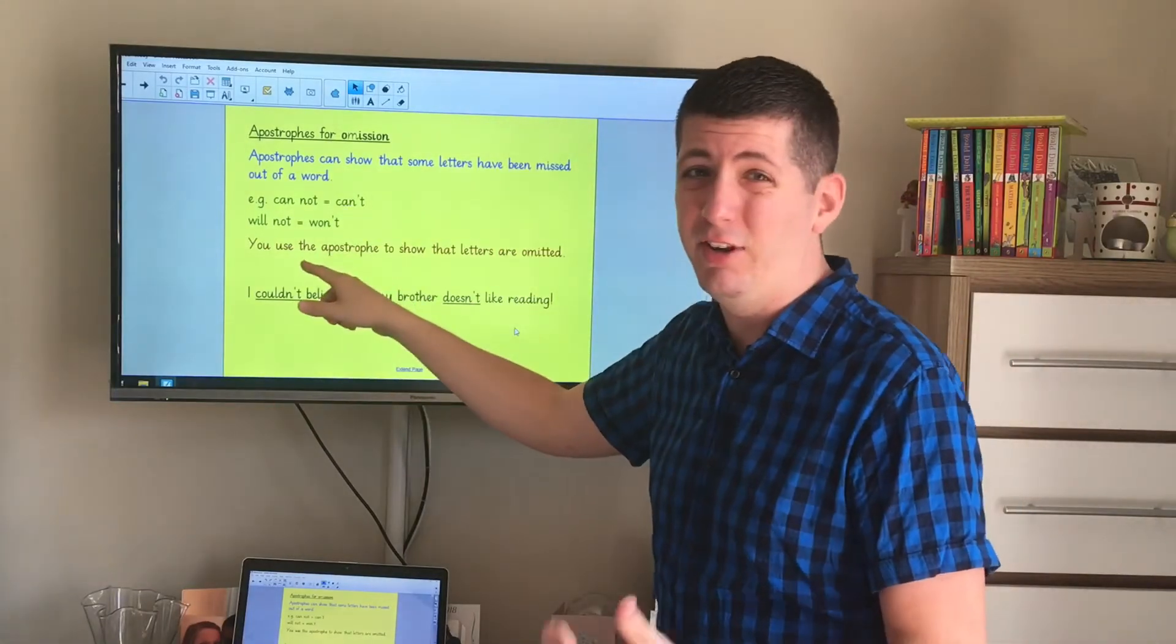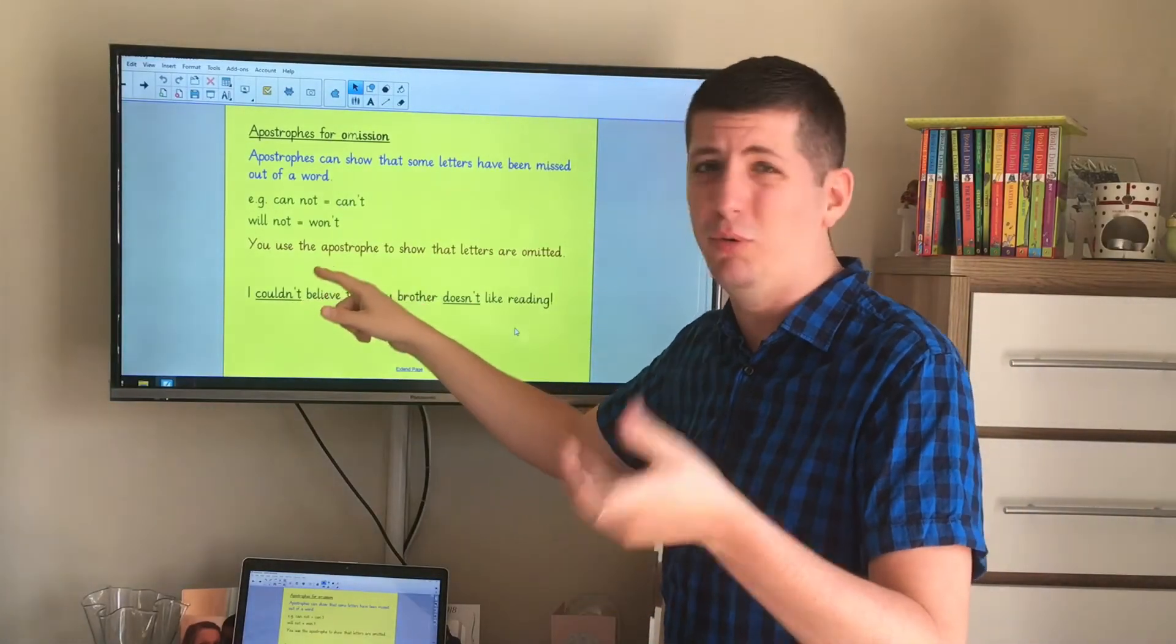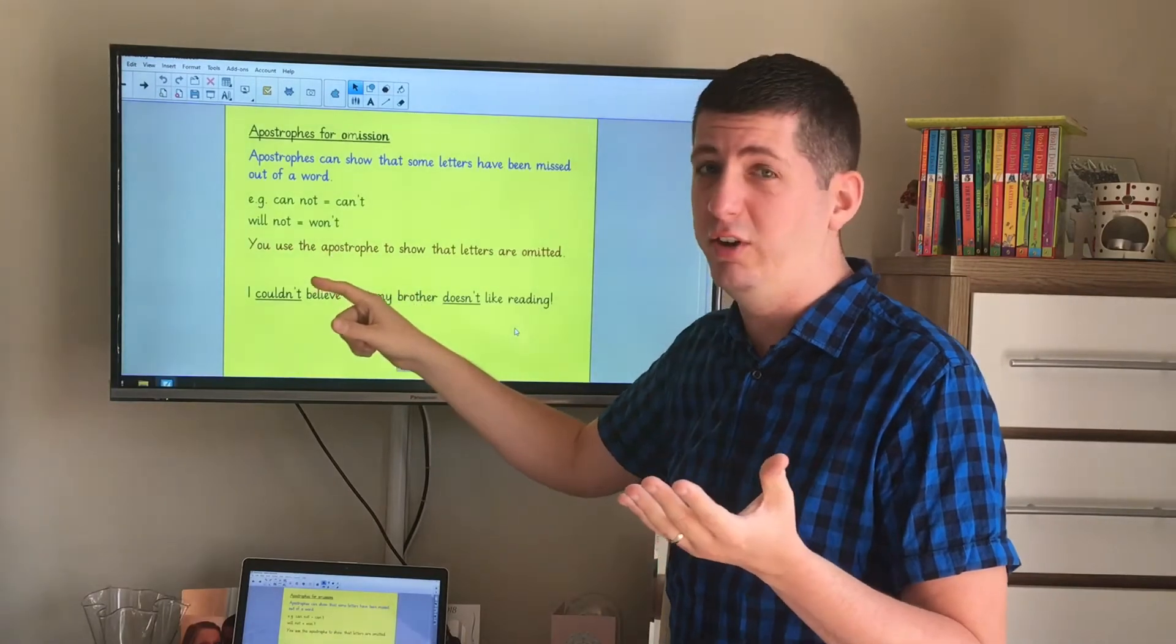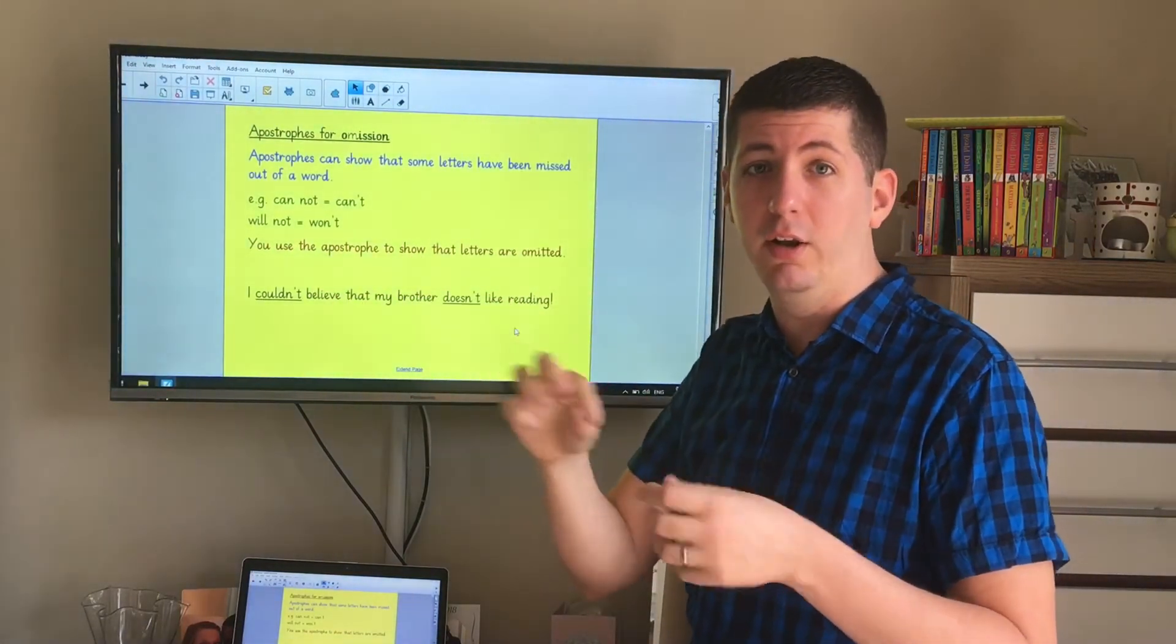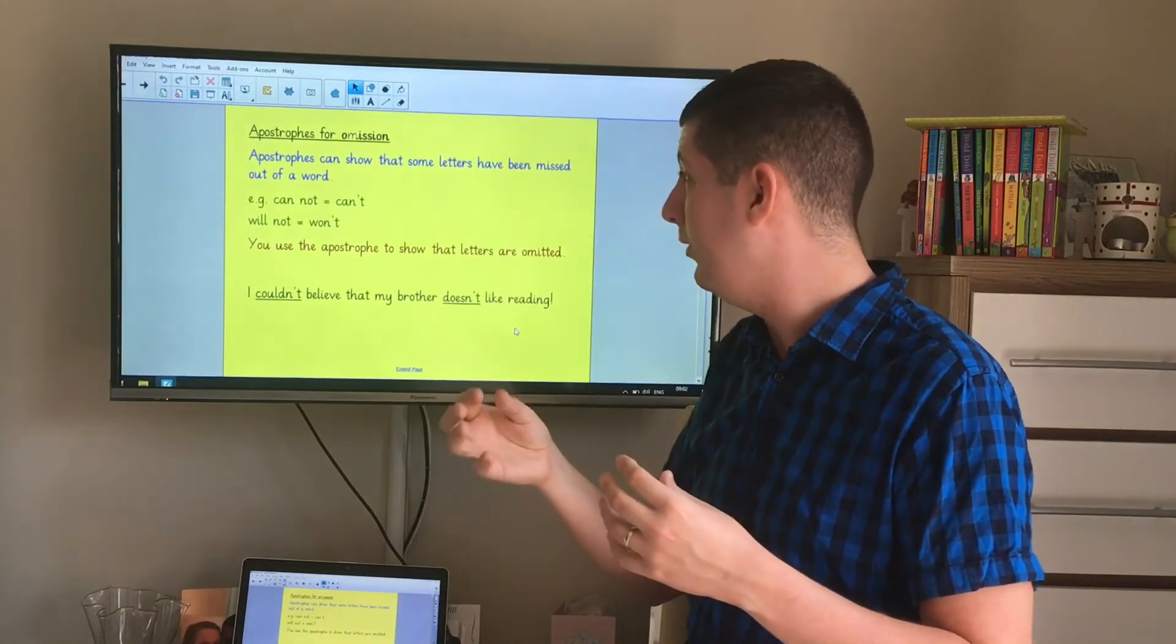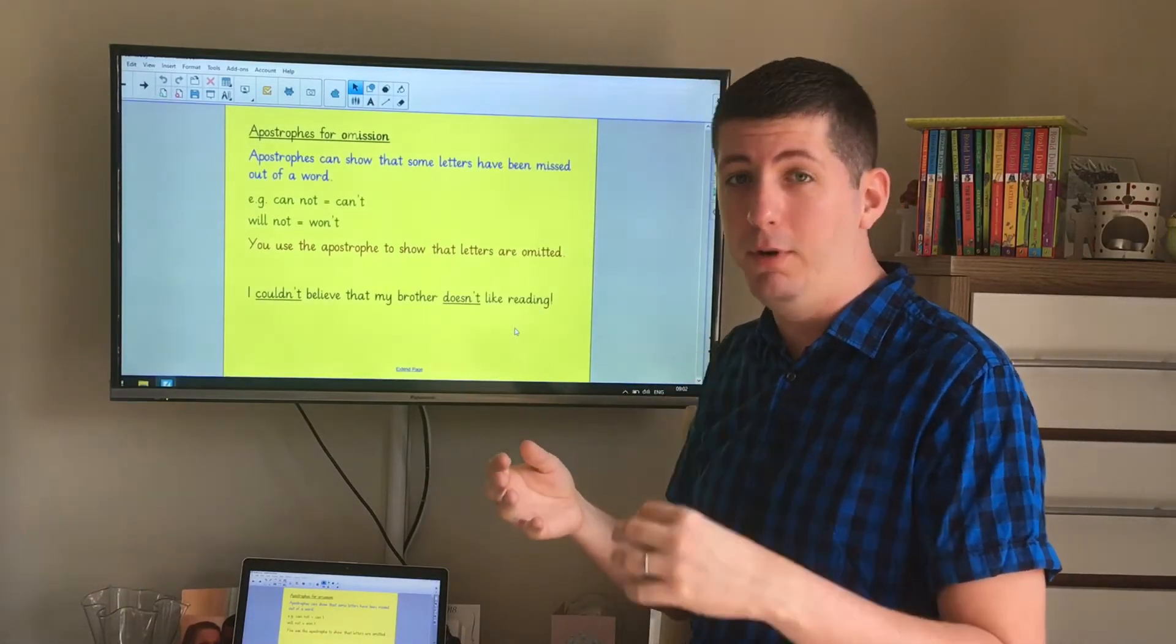Will and not I can push together to make the word won't. Now in this case actually it's a bit strange because the I changes to an O as well. It's a very bizarre one, one you have to remember, but the apostrophe shows that the N and the O in not are missing. There's a letter missing so it shows there's that omission there.